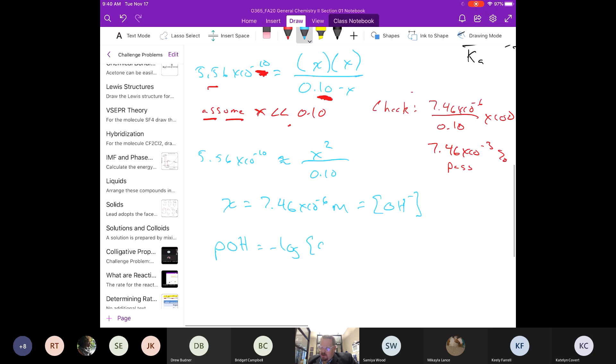And the way I'm going to do it is by first calculating the pOH, which is the negative log of the OH minus concentration, 7.46 times 10 to the negative 6. This ends up being 5.13. And then pH is equal to 14 minus pOH, which is 14 minus 5.13. So our answer is 8.87.